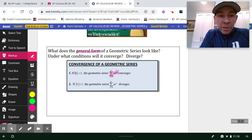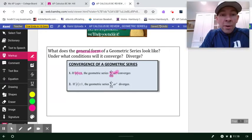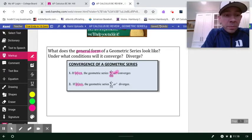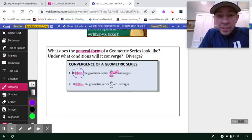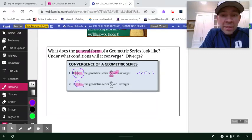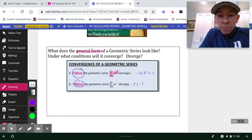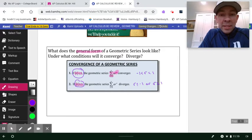Under what conditions will it converge? Basically, as long as the absolute value of r is less than one. In other words, we want that common ratio to be as small as possible. The smaller it is, the better the chance we have of converging. However, if the absolute value of r is greater than or equal to one, then we're going to diverge. This statement right here is equivalent to saying negative one is less than r, which is less than one. And this statement right here is equivalent to saying that r is less than or equal to negative one or r is greater than or equal to positive one.